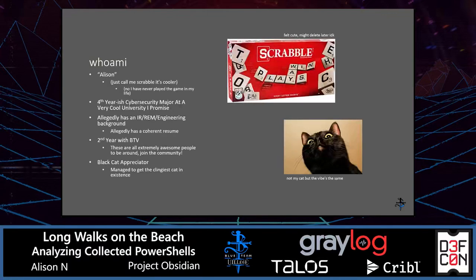A little bit about myself: my name is Allison, although I go by Scrabble. I'm a fourth-year cybersecurity major at a university in the Northeast, and my background is mainly in incident response, reverse engineering, and cybersecurity engineering. I like to stay on the blue team side of things. This is my second year with Blue Team Village — last year I was part of the malware station as well.